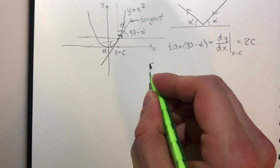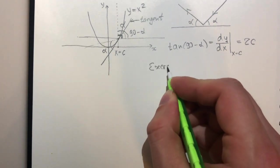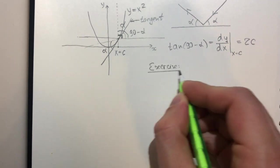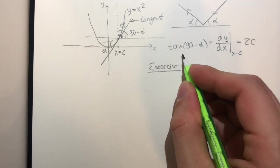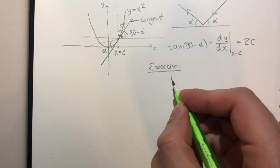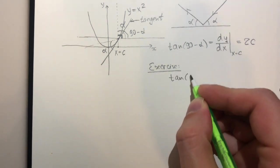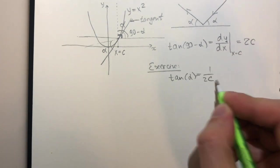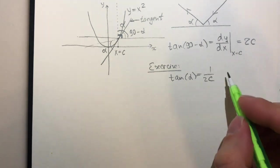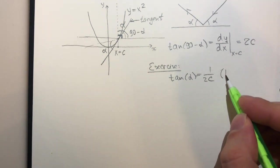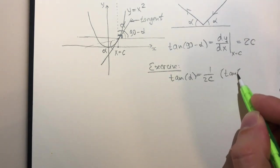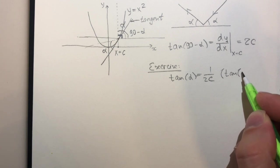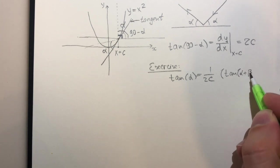Now, I will leave it as an exercise to show that this formula implies that tangent of alpha is 1 over 2c. And this is quite easy. You just need to use the formula for tangent of alpha plus beta.